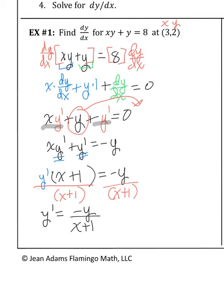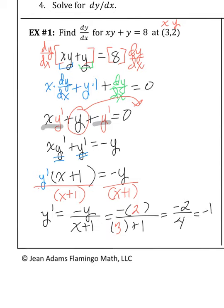Substituting x = 3 and y = 2 into y' = −y/(x + 1): we get −2/(3 + 1) = −2/4 = −1/2. The final answer is −1/2.